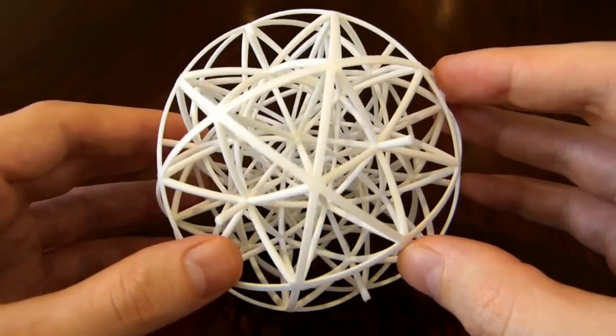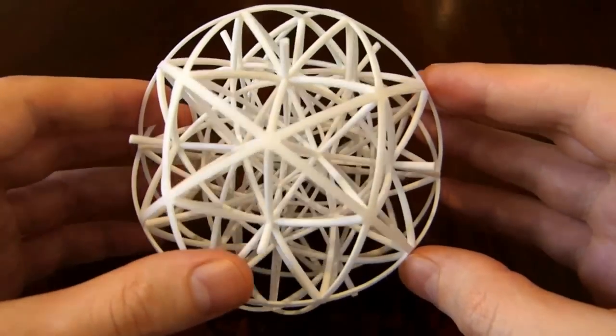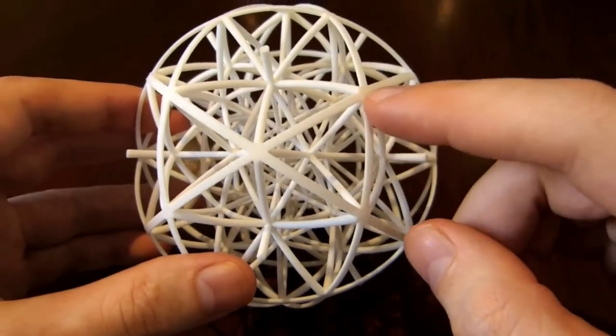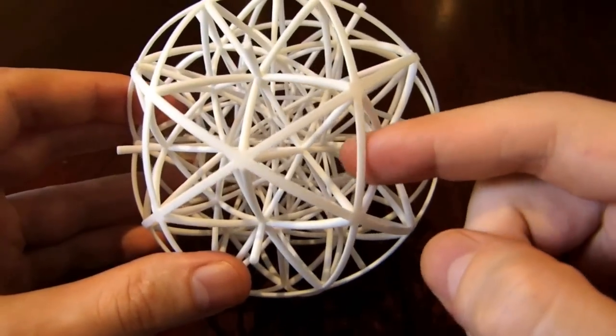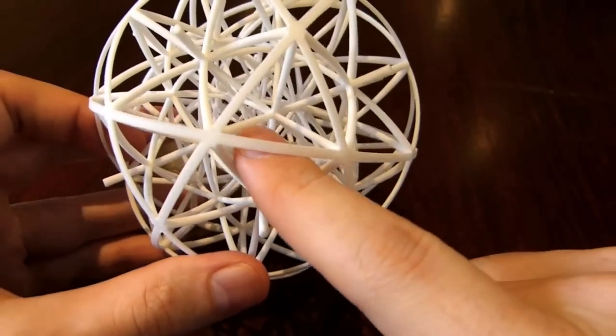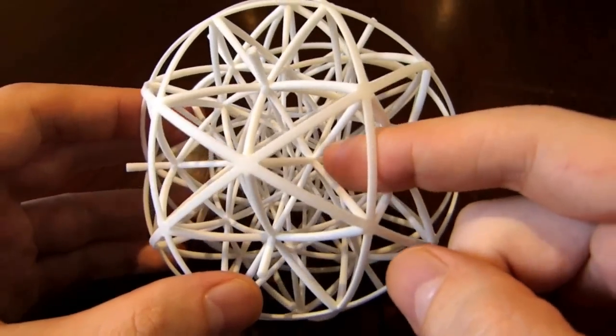The 600 cell has 600 tetrahedral faces. You can see one of the tetrahedra here. There's this triangle here, together with three edges inside to make up a tetrahedron.